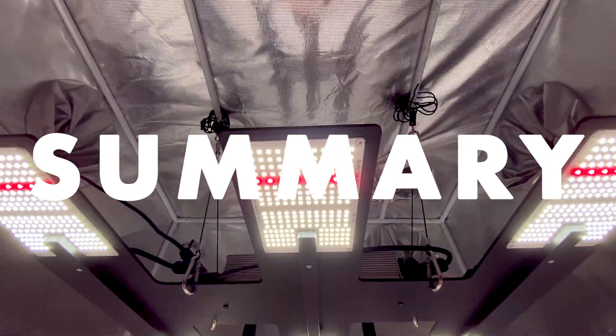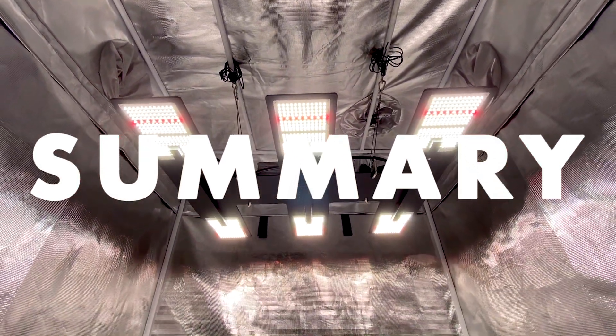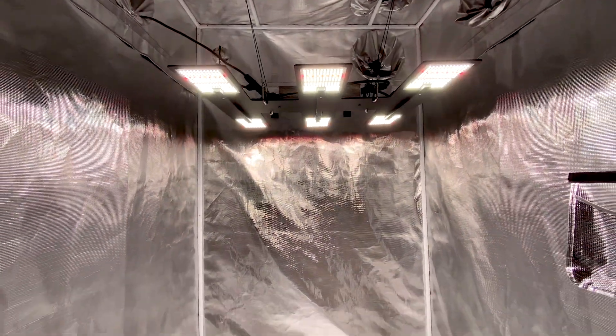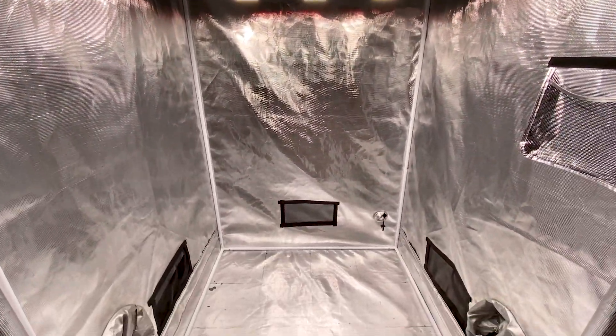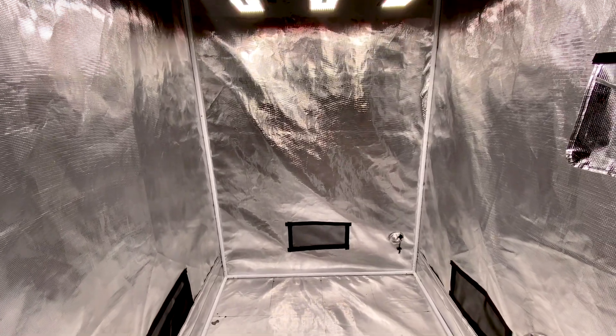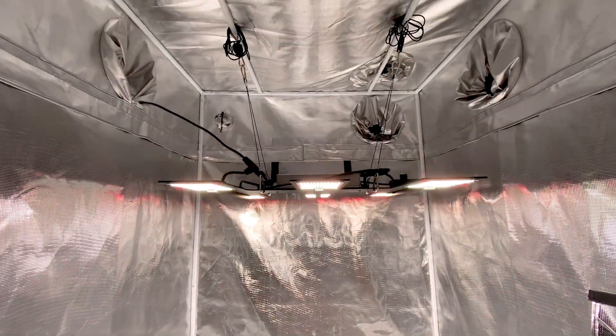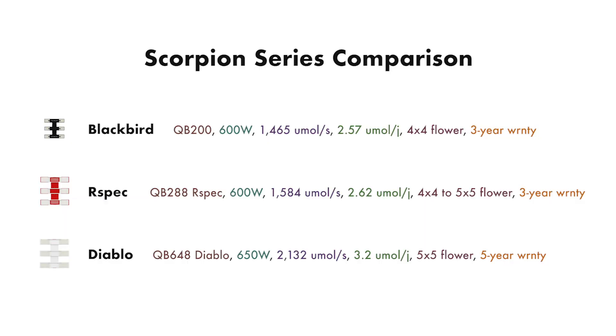The HLG Blackbird is another great light by Horticulture Lighting Group. The light output is perfect for a 4x4 and the spacing of the quantum boards on the fixture allows for even intensity over the canopy. By comparing the Blackbird to the Scorpion Diablo and Scorpion R-Spec I'll be able to put this fixture into context a little bit better.